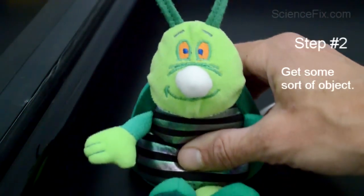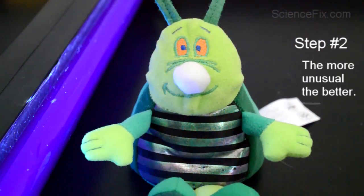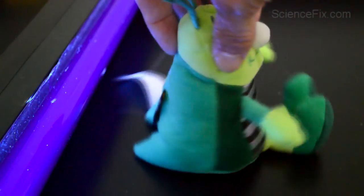Alright, step two, get yourself some kind of object. I get a stuffed animal, and I like this guy because he'll say things electronically.